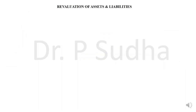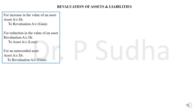Now let us see how to do revaluation. When you revalue, we have to revalue both assets and liabilities. For assets, the three situations are: there may be an increase in the asset, there may be a decrease, or we may come across an unrecorded asset. When the value of an asset increases or we come across an unrecorded asset, it will result in a gain. On the other hand, if we come across a reduction in the value of an asset, it will result in a loss.